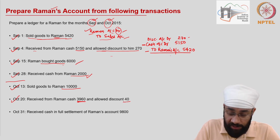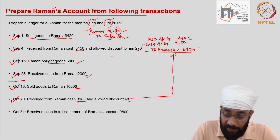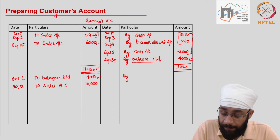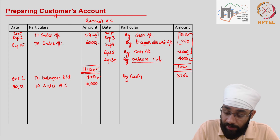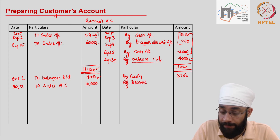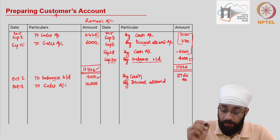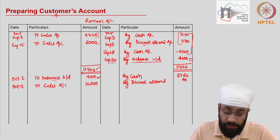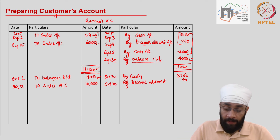On October 20th, you receive from Raman cash of 3960 and allow him a discount of 40. This is similar to the earlier transaction. You are receiving 3960, so write 'By Cash' 3960, and also 'By Discount Allowed' 40. This means the 4000 rupees that were due have now been received and settled — the 4000 has been written off and paid by the customer — so only 10,000 remains due.